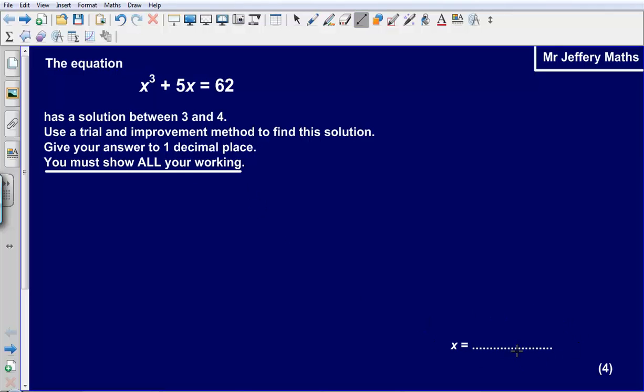Now if you get a correct value for x but you have shown no working, you get no marks. So as I said this is really the most important sentence in the question. So let's take a look at what we need to do here. Now all that trial and improvement means, it just means instead of solving an equation by using methods that we might have looked at before,